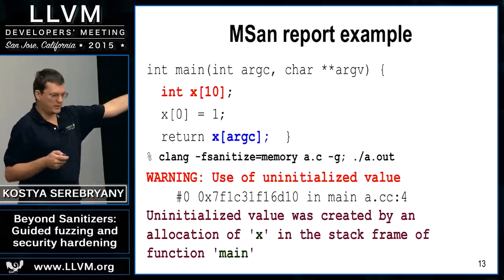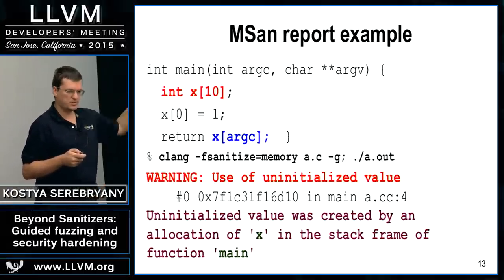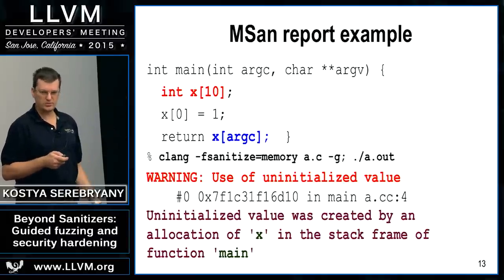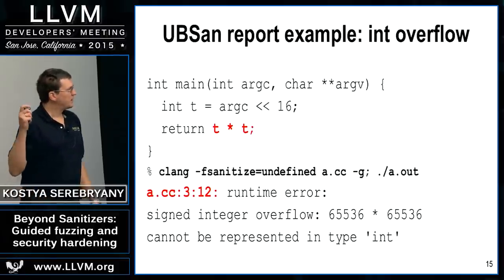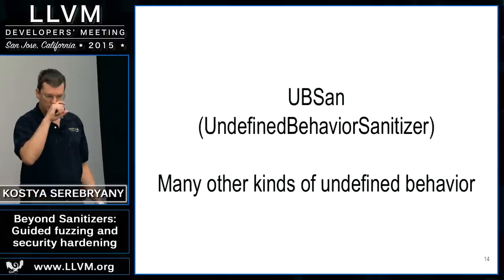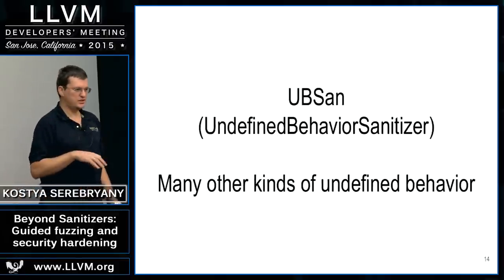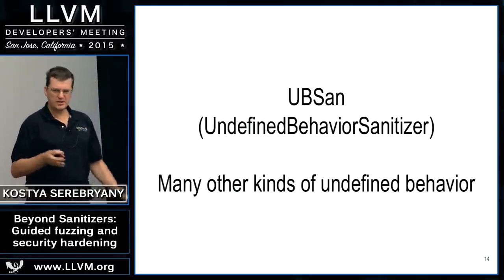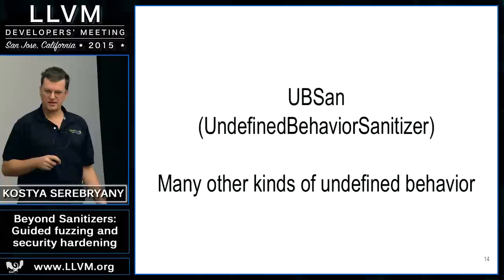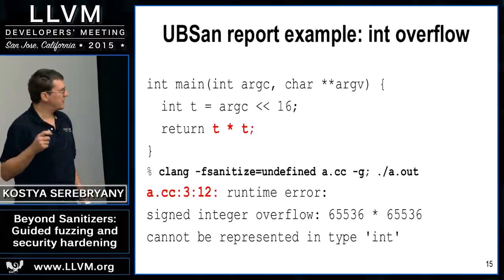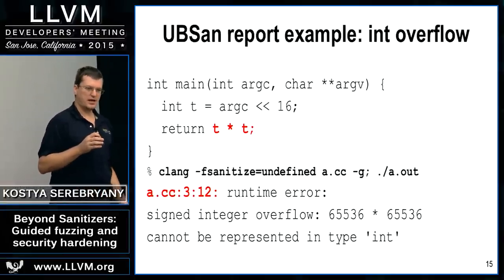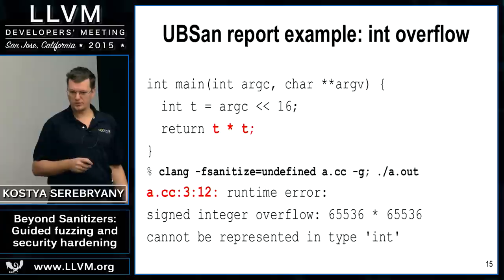You need to compile your program with a special switch, run it, and if the problem happens at runtime, the tool will report it with lots of details. Last but not least, UBSan — UB stands for undefined behavior — finds more or less all other kinds of undefined behavior in C++ programs. The most obvious example is signed integer overflow.